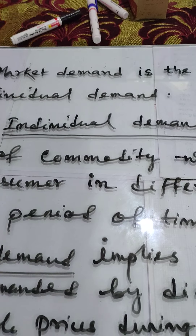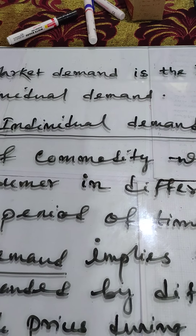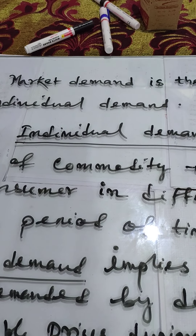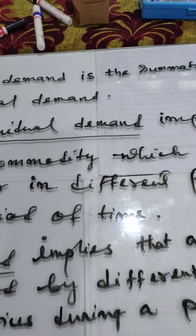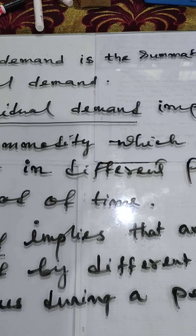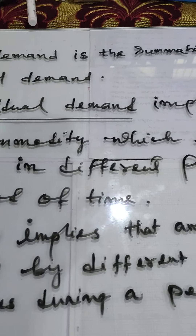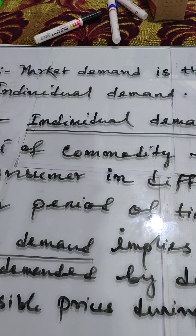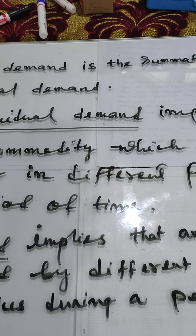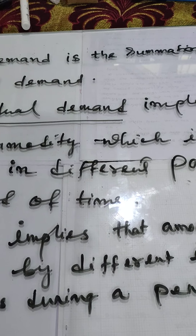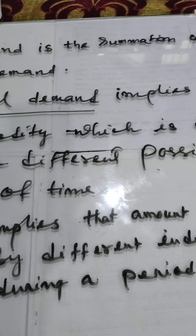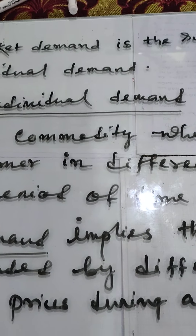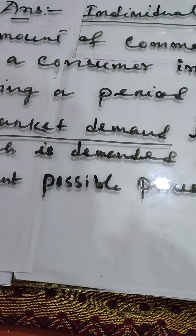Individual demand implies the demand of an individual for a commodity — that is, demanded by a single individual. It is the demand for a commodity at different possible prices, as there is a relationship between demand and price. This demand occurs during a period of time. In simple terms, when a person demands a commodity at different possible prices during a period of time, it is known as individual demand.